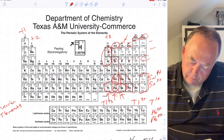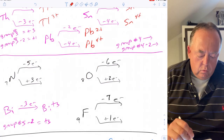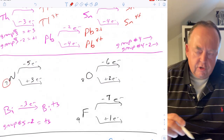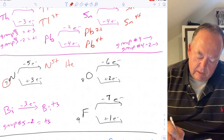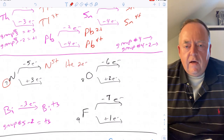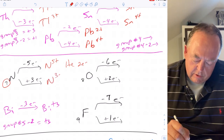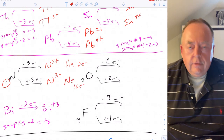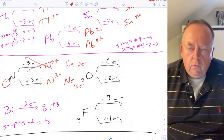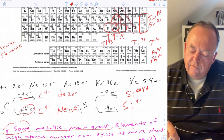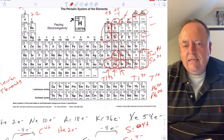Group four likes to be plus four or minus four. In group five, nitrogen has seven electrons. It could lose five and be N⁵⁺ with two electrons like helium, or gain three and be N³⁻ with ten electrons like neon. It always wants to do the lesser, so it wants to gain three. Once you get beyond group four, elements like to gain electrons rather than lose them — non-metals like to be negatively charged.